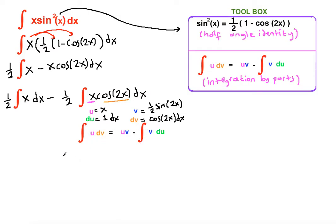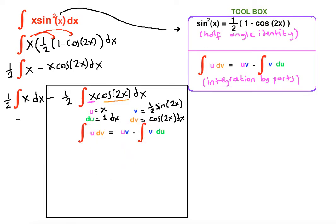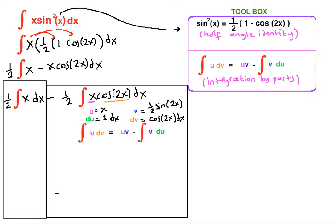Now we apply the integration by parts formula. Let me box this part separately and connect it below. We have negative one-half distributed to u·v, which is x times ½·sin(2x), written as ½·x·sin(2x), minus the integral of v·du.